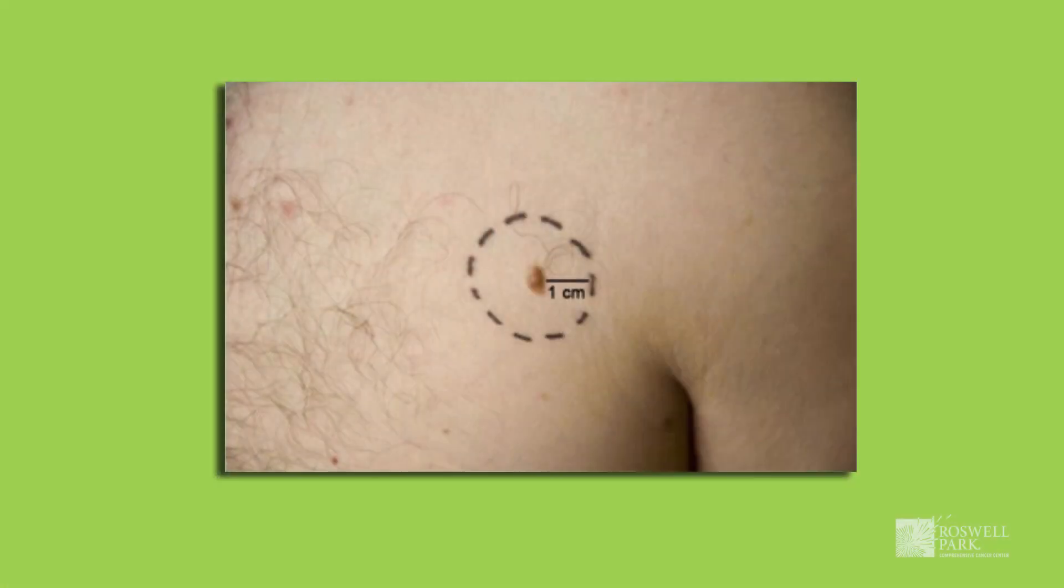How do we determine how wide around that site we go? That's been generated from many clinical trials where we know that if we take a certain distance around the melanoma, it's very unlikely that melanoma is going to return in that area. Typically we do either one centimeter margins, and that depends on the thickness of your melanoma, or two centimeter margins if you have a thicker melanoma.